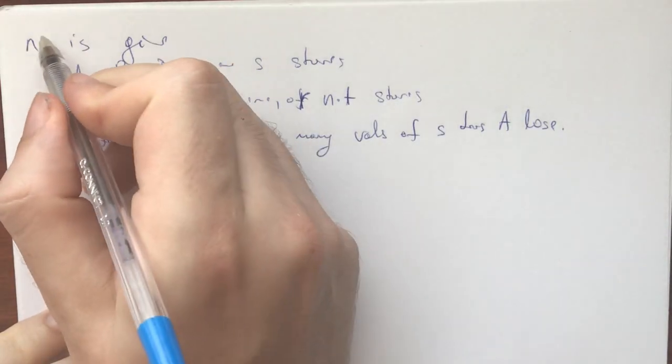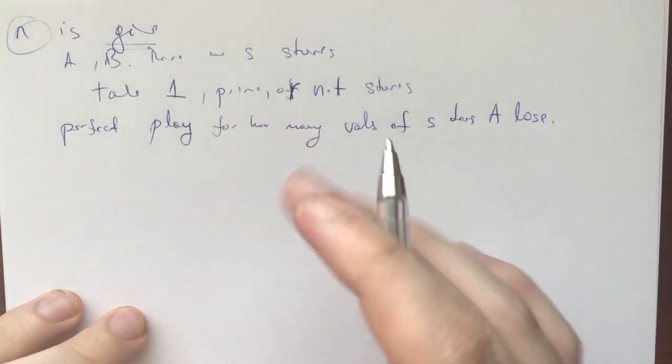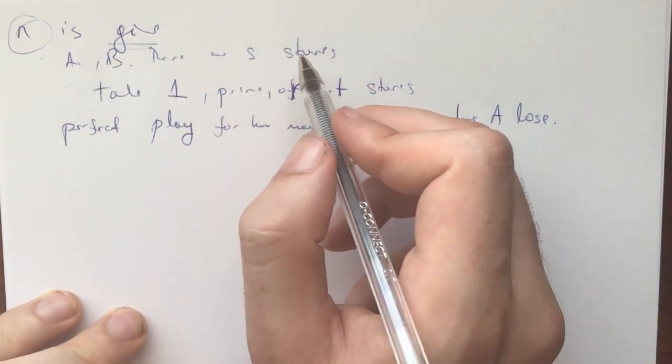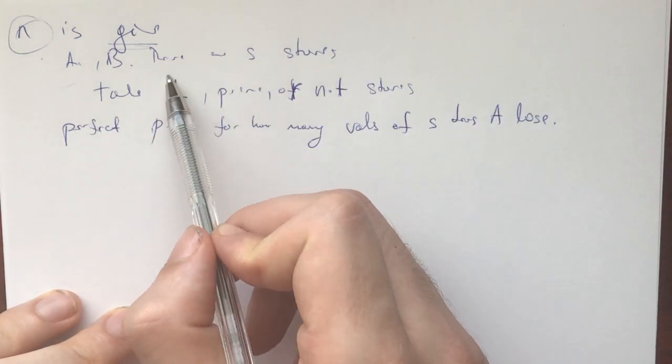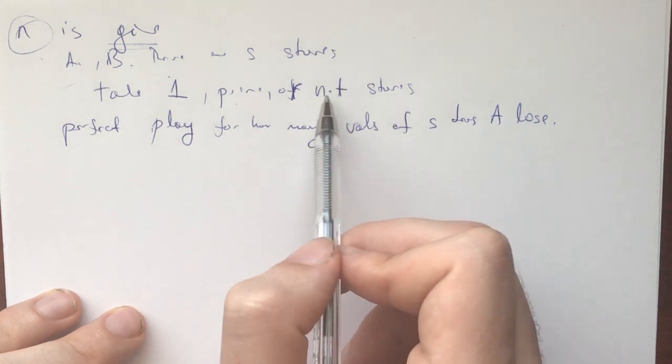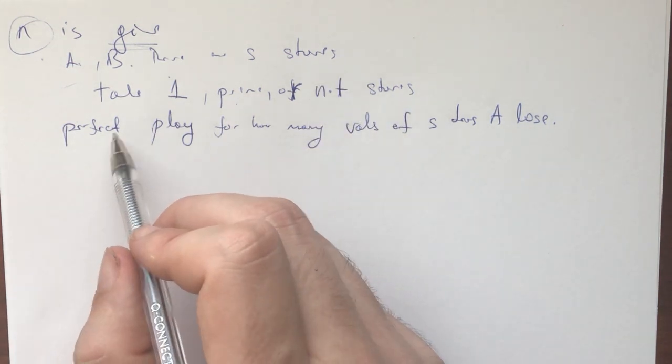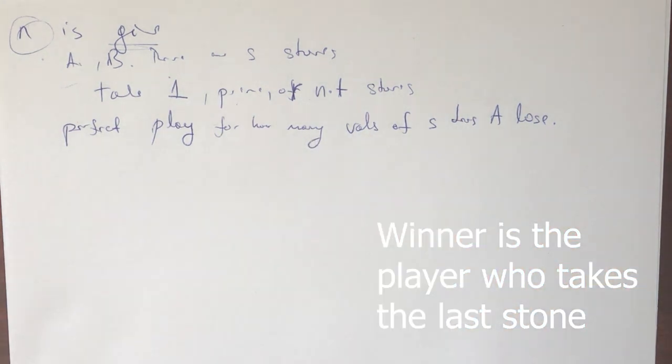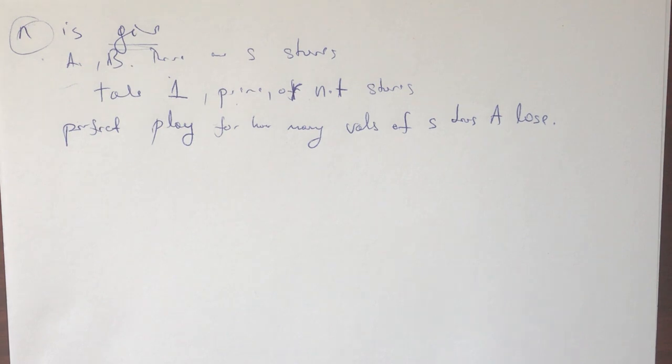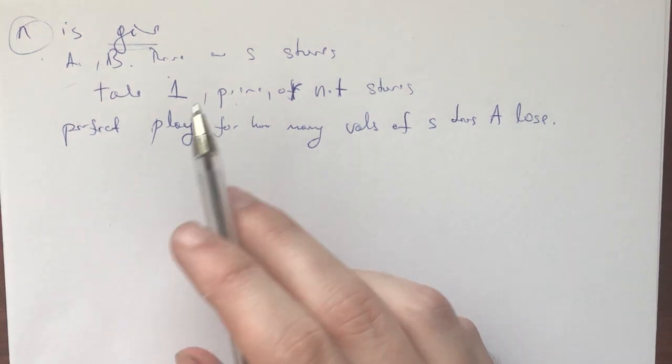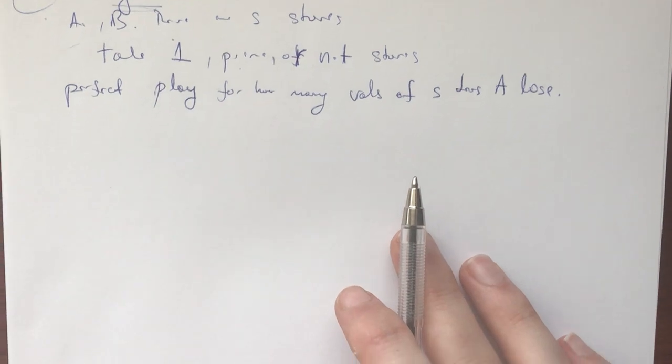So this is the problem. We have n, a positive integer that's given, and we have two players A and B, A goes first. There are s stones in a pile and they take turns where they take one, a prime number, or n times t stones, where t is some positive integer, and the question is with perfect play for how many values of s does A lose? If you just read the problem statement, it looks like a very freaky problem. You can take a prime number of stones, like what are you even going to do with that? You don't know the distribution of primes, how are you going to figure this out? That's why I love this problem.